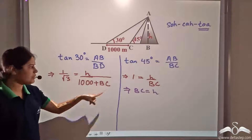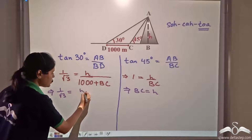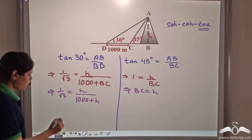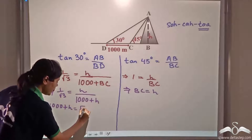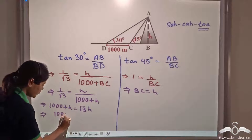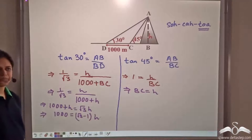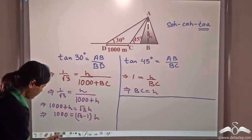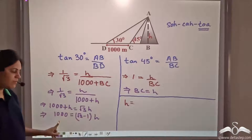Now put this value of BC back into the first equation. So we get one by root three is equal to H divided by one thousand plus H. This gives us one thousand plus H equals root three times H, that is one thousand equals root three minus one times H. So from here, H is equal to one thousand divided by root three minus one.